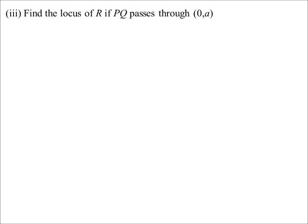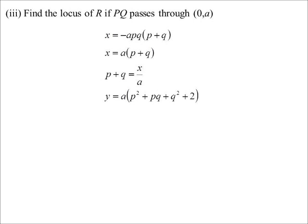The third part of the question then said, let's go find the locus of R if pq is a focal chord. They told us the x value was minus a times pq times p plus q, that's what we found out back in part 2. So x is equal to a times p plus q. I know p plus q then is x over a. Notice, by the way, I used the pq equals negative 1 idea there. So that's why the pq has disappeared. It changed from minus pq to positive 1 in the next line.